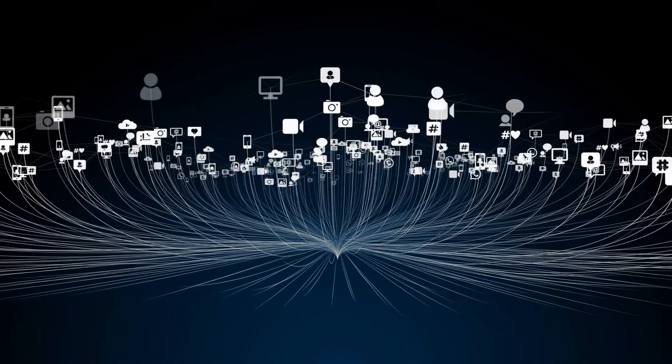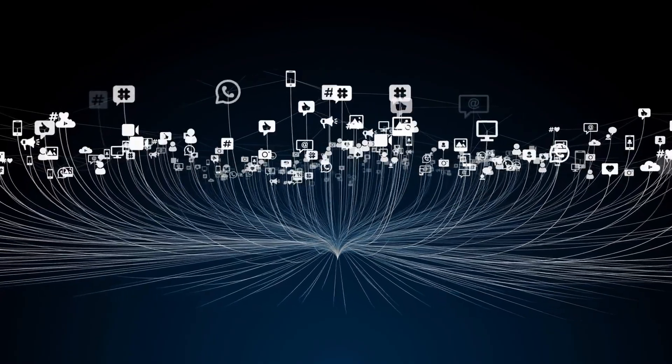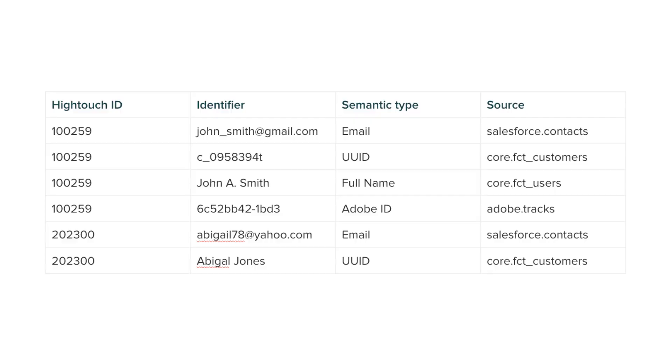When you think about the process of identity resolution and solving this problem internally, there are a lot of different ways to do it. But ultimately, what companies want is a single table — sitting in something like a data warehouse or a customer data platform — that has all the identifiers for a customer merged together. A single row with all the customer's email addresses, phone numbers, cookies, mobile identifiers, and more, so you have a full picture of the customer when running analytics or marketing campaigns. That's really the crux of identity resolution: creating that graph of all the identifiers and resolving it to a single view of the customer.